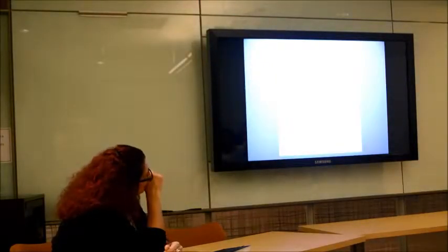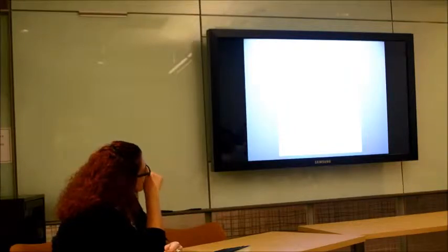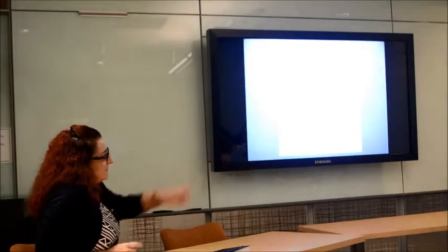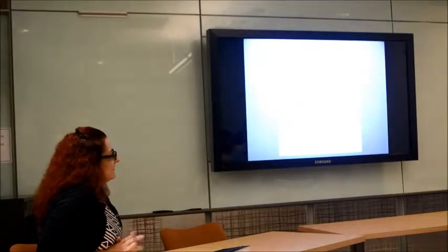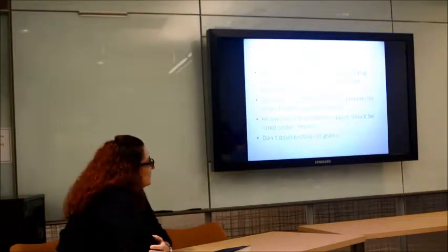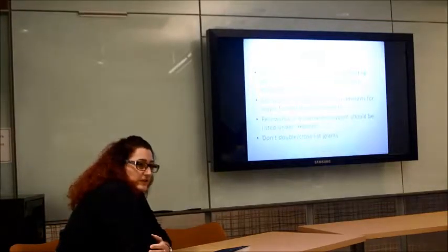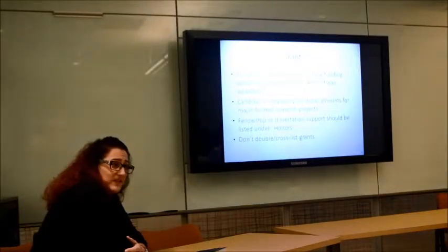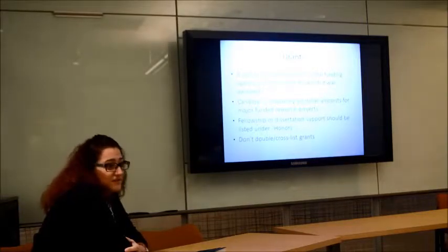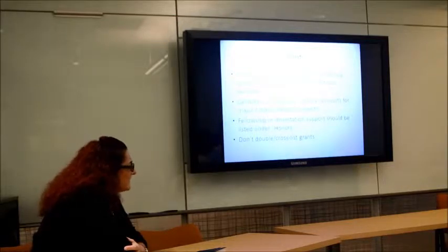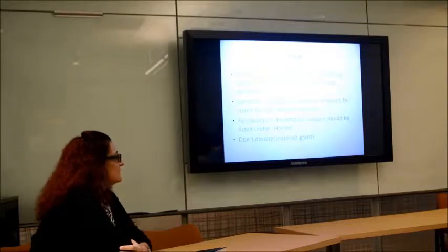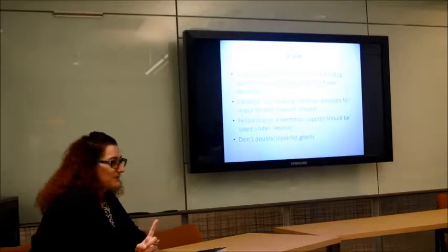Here's an awards section — publications divided into refereed and invited, with the conference, presentation title, and year. For grants, if you've received funding, list the funding agency and the project for which it was awarded — this includes dissertation fellowships and research grants. Even GPSA grants to present or do work in another state should be included because they involve a peer-reviewed application process. In the sciences, candidates frequently list dollar amounts for major funded research. Don't double or cross-list your grants — each thing should only appear once on your CV.